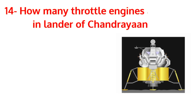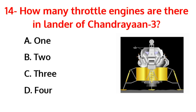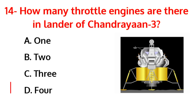How many throttle engines are there in the lander of Chandrayaan-3? The correct answer is option D, 4.